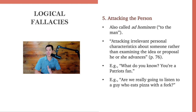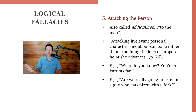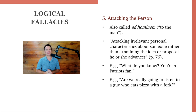Number five: attacking the person, also called ad hominem — literally 'at the man.' Instead of engaging the substance of an argument, you say something about the person personally. It's attacking irrelevant personal characteristics rather than examining the idea or proposal they advance. Just because it came from someone you don't like, you refuse to listen. Someone once said to me, 'What do you know? You're a Patriots fan.' They don't have to listen to anything I say because of the football team I support. You can't let that kind of logic work its way into a group or team discussion, because you start making decisions for bad reasons instead of good reasons that will help your team.